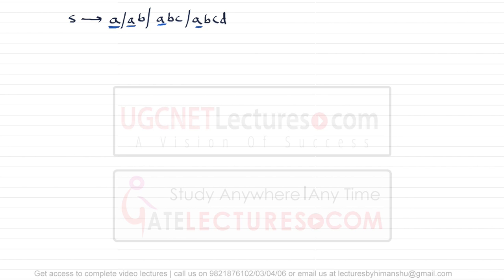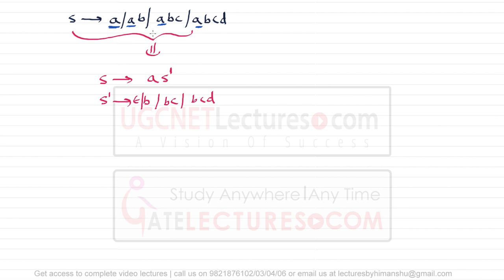Consider one more example: S can derive a slash a b slash a b c slash a b c d. This grammar obviously has left factoring because the first symbol is exactly the same in all productions. To eliminate it, we convert to: S derives a S', where S' can give epsilon slash b slash b c slash b c d. But you can see S' still has left factoring because the second symbol 'b' is repeated, creating the same issue.